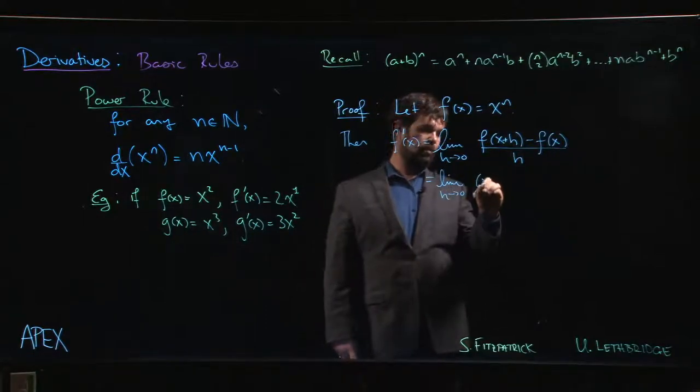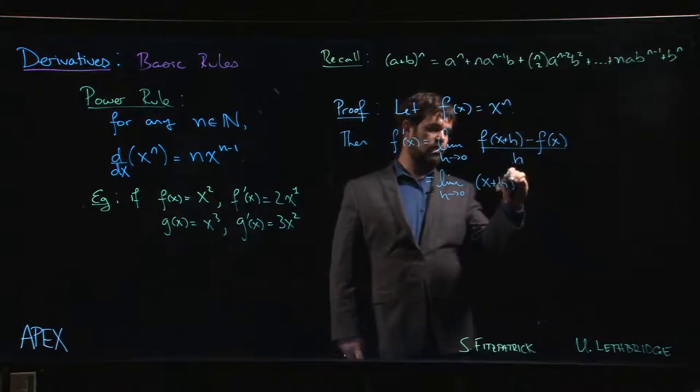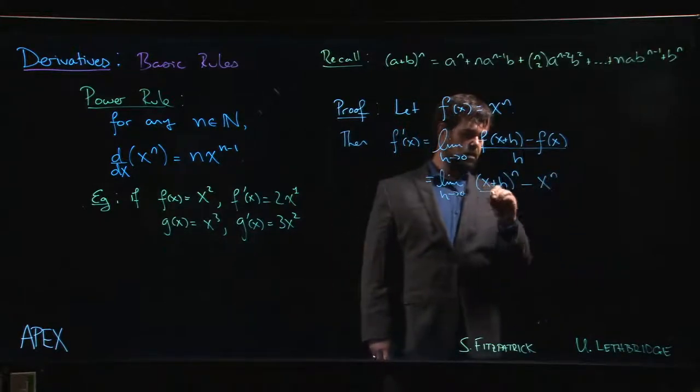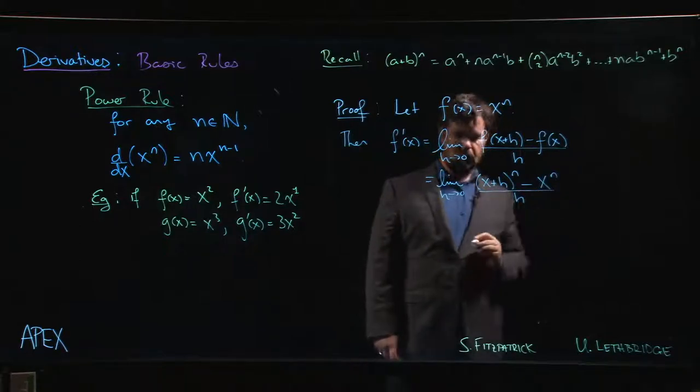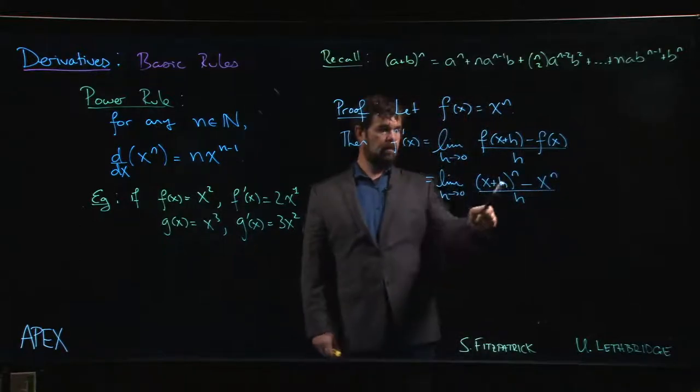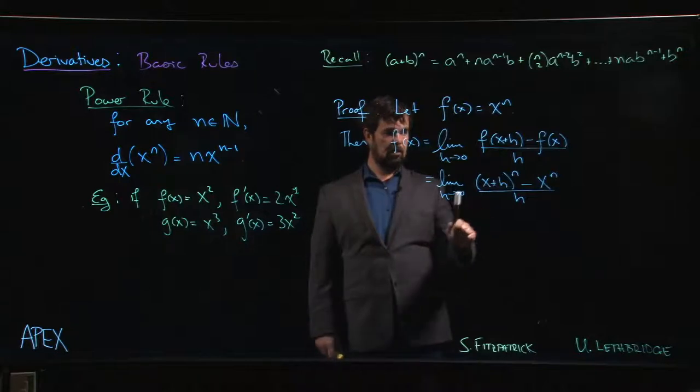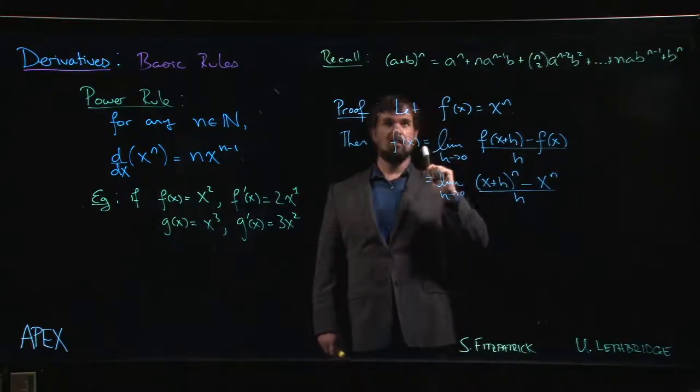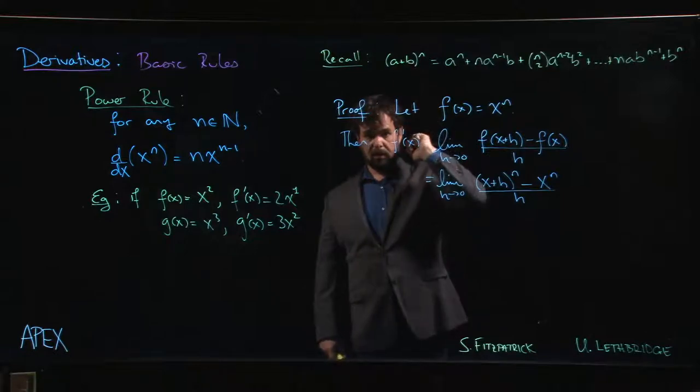And in this case, that becomes x plus h to the n minus x to the n over h. Now, here you have a power of a binomial. The reason we're doing n to be a positive integer is that if n is a positive integer, the binomial theorem holds.